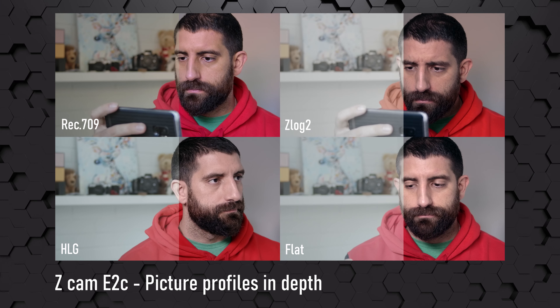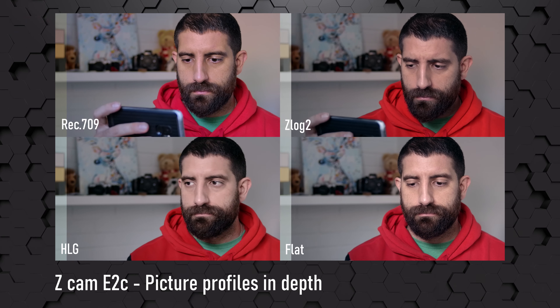Hi, this is Roger in Finland, and today we're going to go in-depth with the picture profiles of the Z-Cam E2C. For the impatient ones: Rec.709 looks great out of camera, given that you expose it and light it well. Z-Log 2 gives you the most dynamic range and more room to work afterwards, but it's a bit more difficult to grade. Flat still gives a lot of dynamic range and is pretty easy to grade. HLG will be familiar if you're coming from Sony or Panasonic HLG. And then there's Concert, which I have no idea why it's in there.